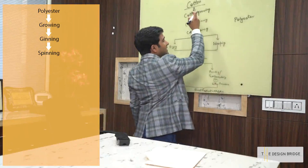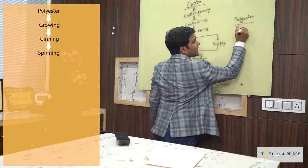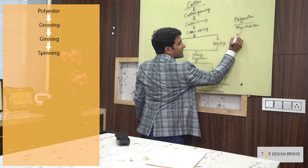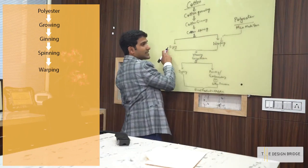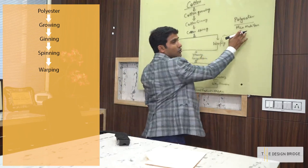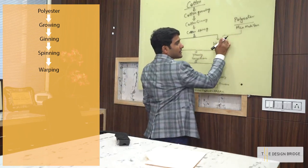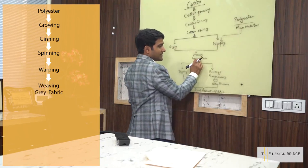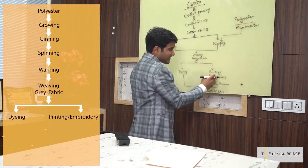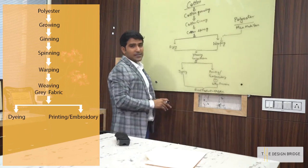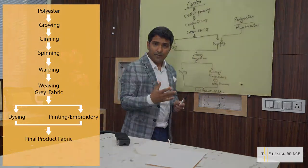In polyester, the process remains the same. The only difference is it is a man-made yarn, so it directly goes for warping — it does not require sizing as the yarn is already strengthened. We go straight to warping and the fabric is ready. It is called grey and then it is ready for printing, embroidery, dyeing or whatever. The final product is polyester fabric.